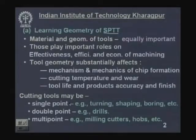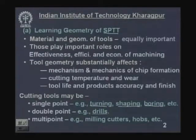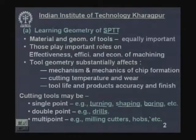Cutting tools may be of three categories. Single point — only one cutting point — for example turning in a lathe, shaping in a shaping machine, planing machine, boring machine, etc. Double point — two primary cutting edges — for example drills. Multi-point cutting tools have a large number of cutting edges, for example milling cutters, hobs for cutting gear teeth, gear shaping cutters, and grinding wheels which have a large number of cutting edges.